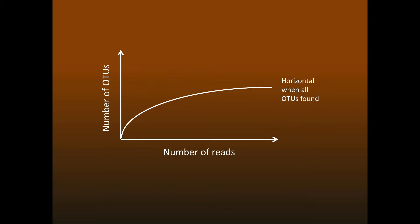Rarefaction analysis plots the number of species or OTUs against the number of observations, which in this case is the number of reads. The idea is that when all species have been observed, then the curve will flatten out into a horizontal line. In traditional biodiversity analysis, we don't have to worry about experimental error in the observations, and this works fine.